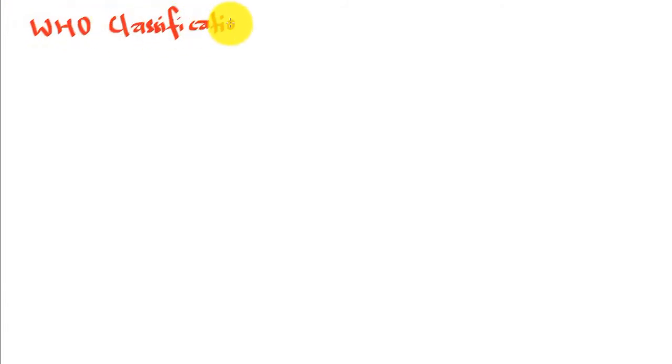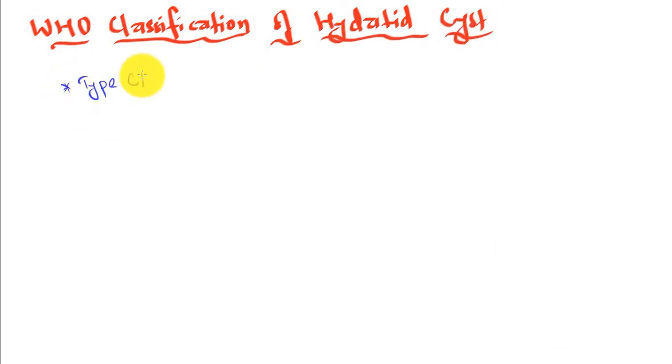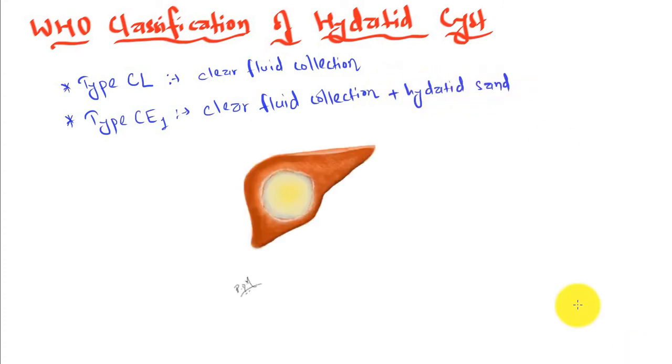Let's move on to WHO classification of hydatid cyst. Type CL means clear fluid collection is present. Type CE1: there is clear fluid collection plus hydatid sand, as you can see here.